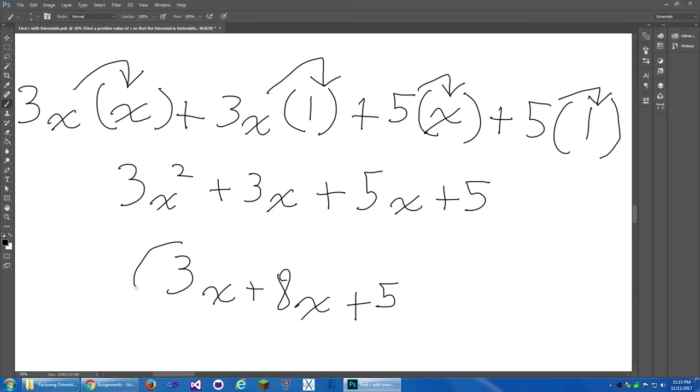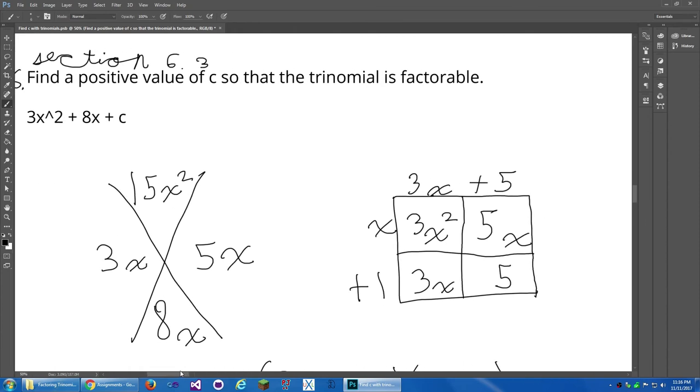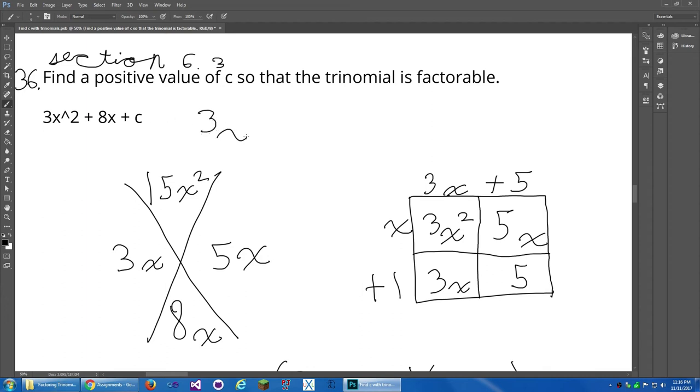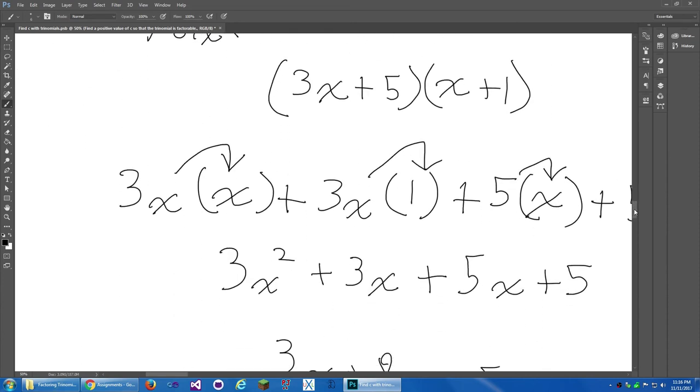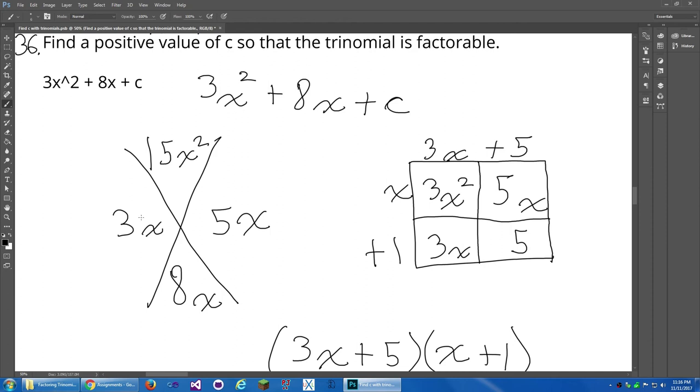Now we can compare this 3x squared plus 8x plus 5. In case you're wondering where everything goes like that then it just kind of disappears, I'm clicking a button on my pen that undoes everything. Now when we compare this we can see that the original was 3x squared, Photoshop doesn't have superscript for some reason, 3x squared plus 8x plus C. Now when we compare this to 3x squared plus 8x plus 5 you can see that it's very similar except that there is now C. Now what you want to use for C is, C right here, you take 3x squared.